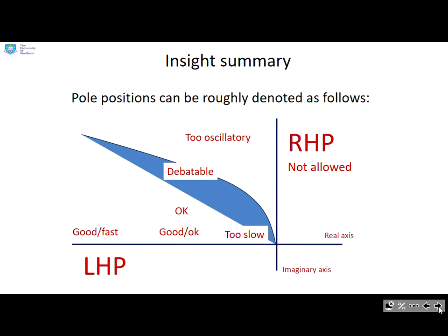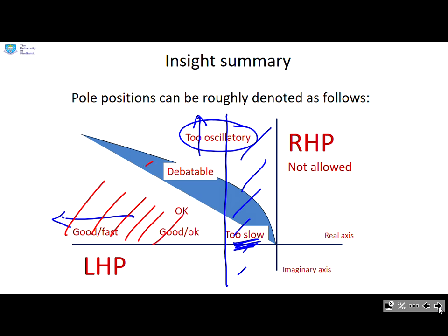Some insight then, what you might do with all these pole positions. So what we've established is the further left you go, the faster you become. Clearly, if you are too far to the right, if you're too close to the imaginary axis, then you're too slow, so that's unsatisfactory. We've also said that if your imaginary part dominates over your real part, you're likely to be too oscillatory, so that's going to be unsatisfactory. So what you've got is a region down here where you think everything's good enough. You've got a region somewhere in the middle where it's debatable whether your behavior is acceptable or not. And then you've got other regions where clearly it's not. And obviously anything in the right half plane is not allowed.